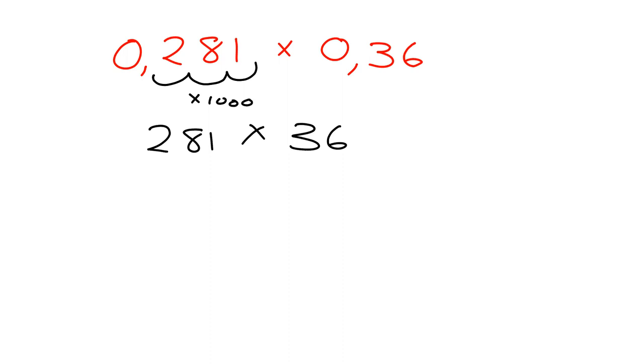Alright, with that I can easily do multiplication. Let's have a look at doing something like 0.281 times 0.36. Now what I want to do with this is I want to first get rid of all the commas, so basically turn this into 281 multiplied by 36. Well, how have I managed to do that? I've had to take this one and multiply it by 1000, and I've had to take this one and multiply it by 100. Now let me do 281 times 36 with normal multiplication.